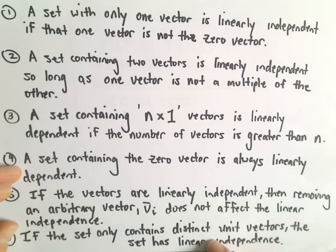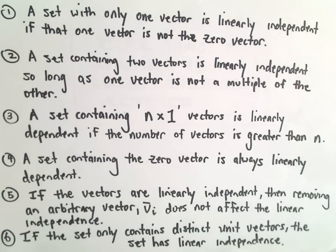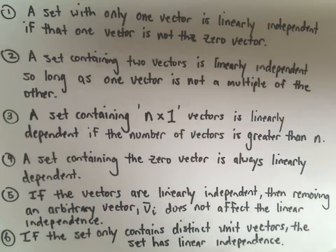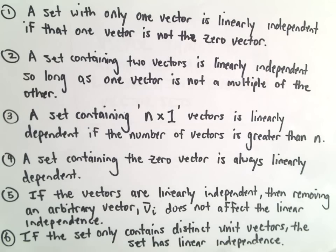And again, if you have just distinct unit vectors, those are always going to be linearly independent. For example,